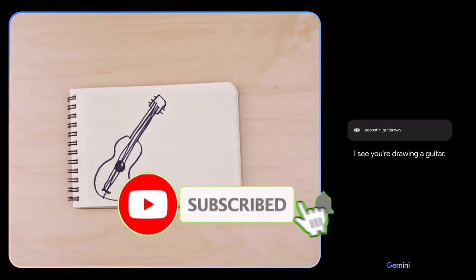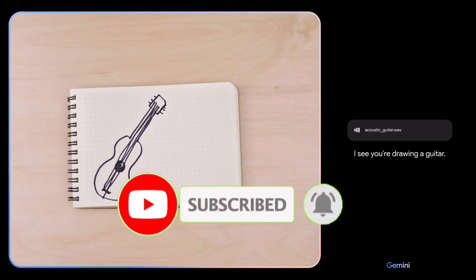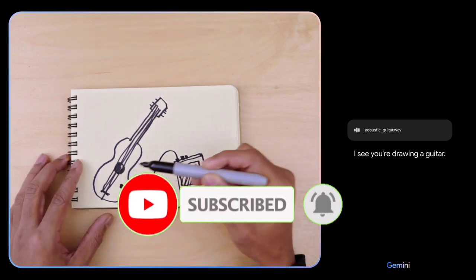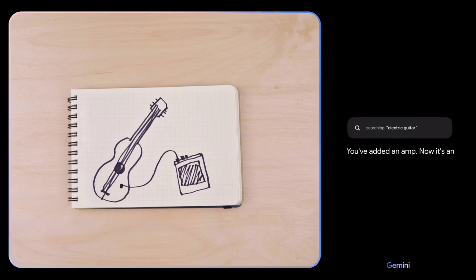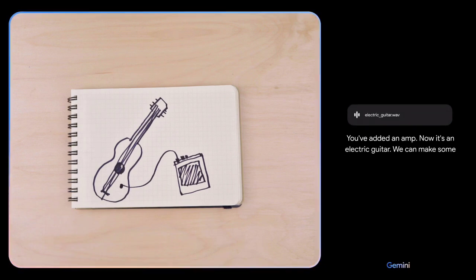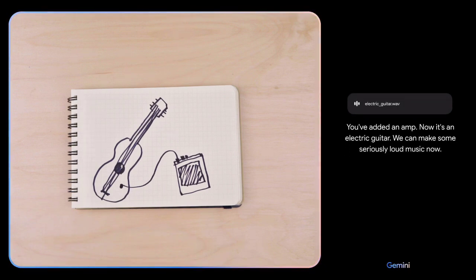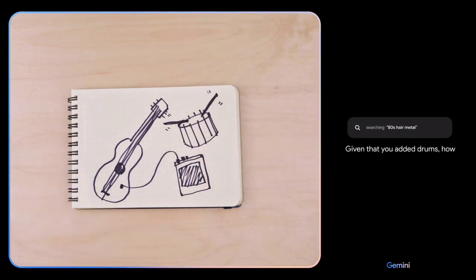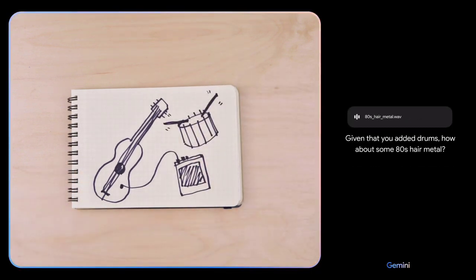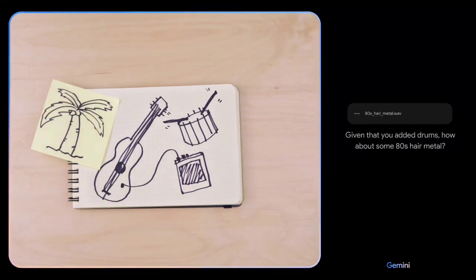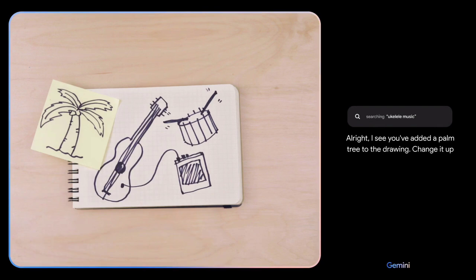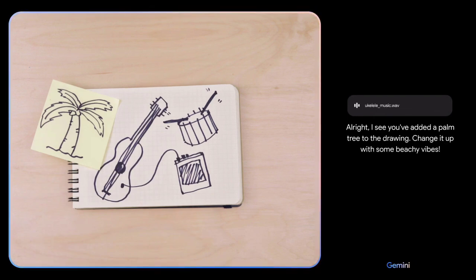I see you're drawing a guitar. You've added an amp. Now it's an electric guitar. We can make some seriously loud music now. Given that you added drums, how about some 80s hair metal? All right. I see you've added a palm tree to the drawing. Change it up with some beachy vibes.